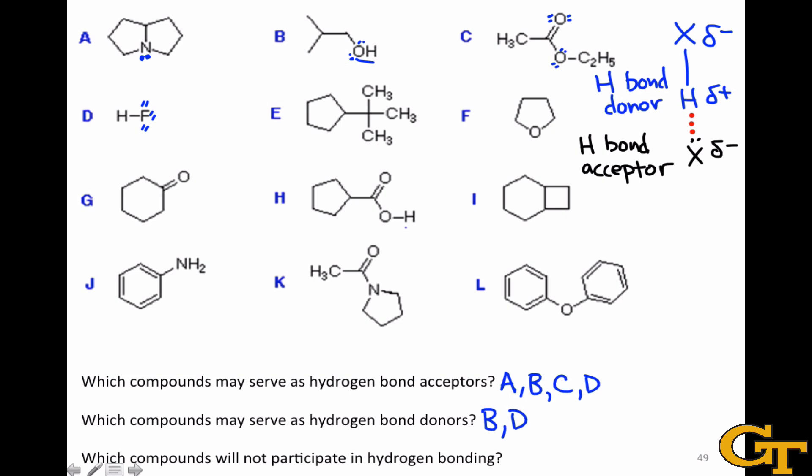Molecule E includes no heteroatoms, and as a result it can neither serve as a hydrogen bond donor nor a hydrogen bond acceptor. So this will not participate in hydrogen bonding at all.